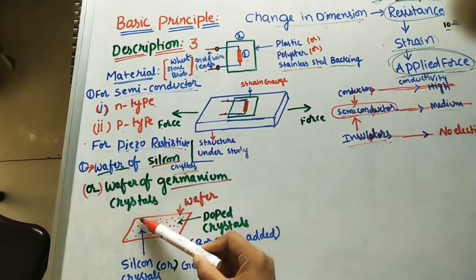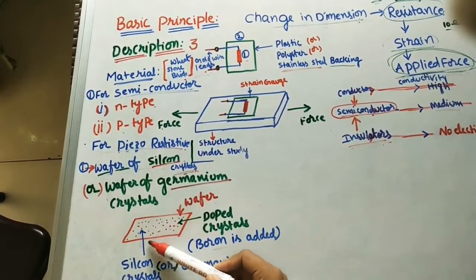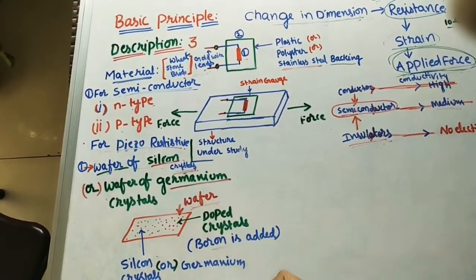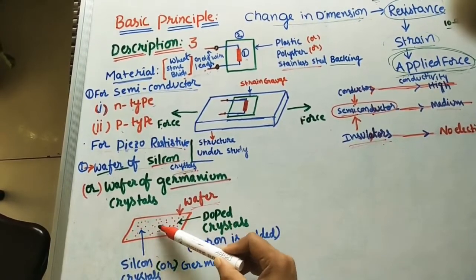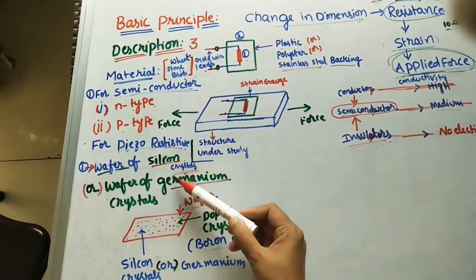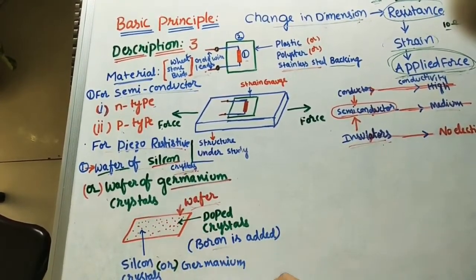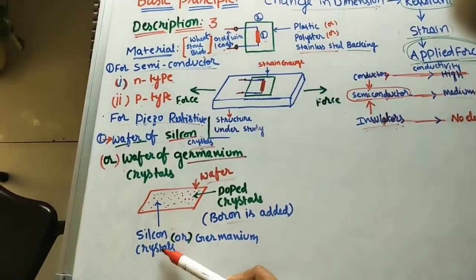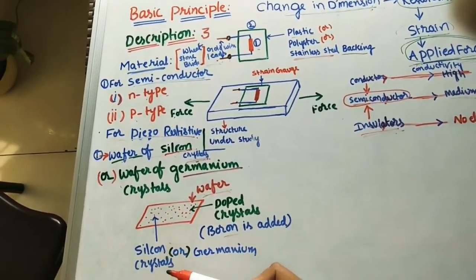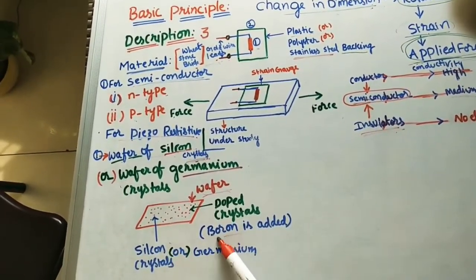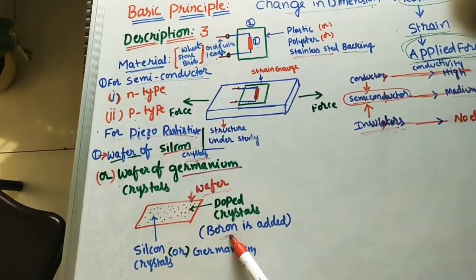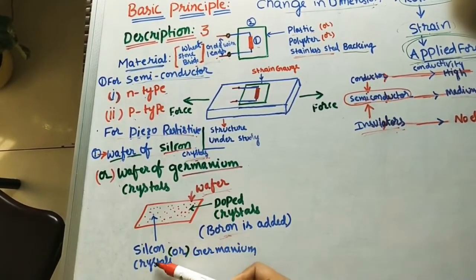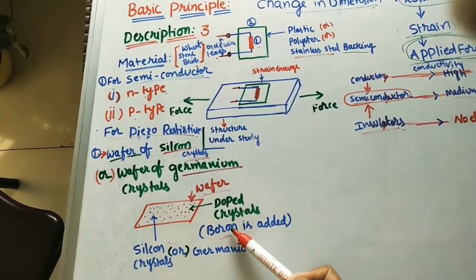If we take a wafer of silicon, on this thin wafer we place silicon crystals. These crystals are bonded with boron crystals — this is called the doping process. Adding boron and silicon crystals together is the doping process, forming what we can call doped crystals.